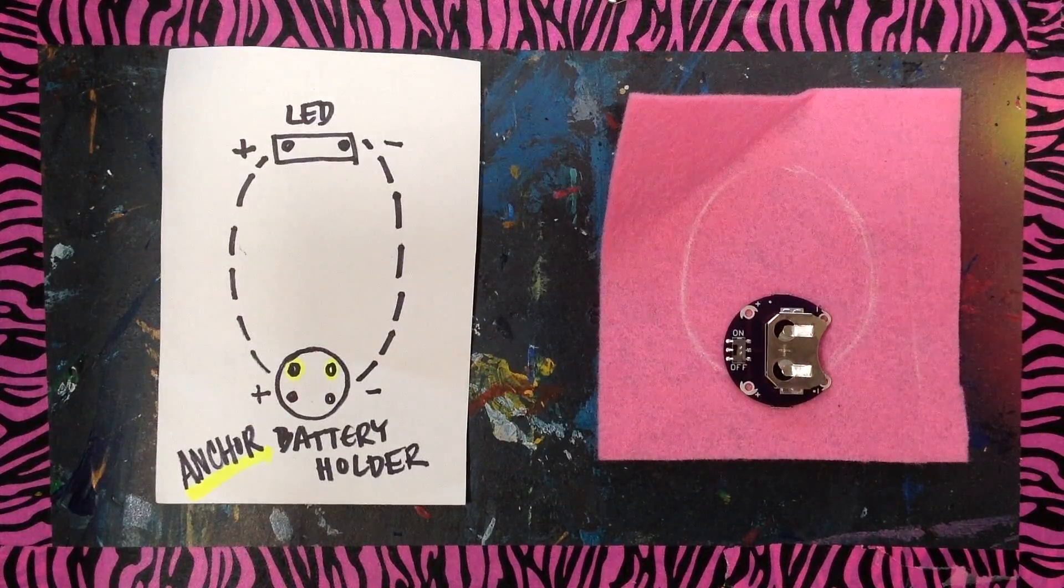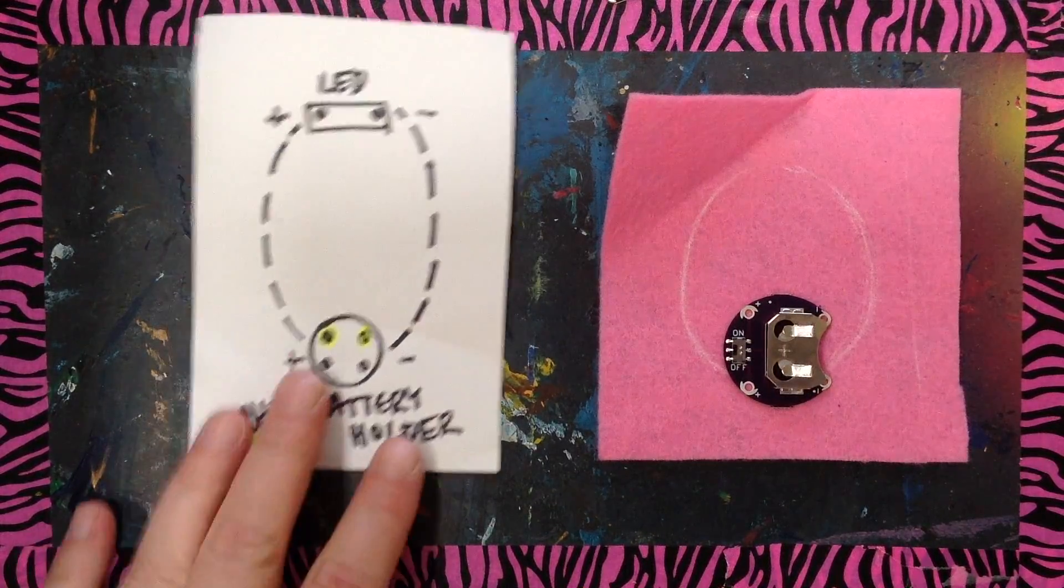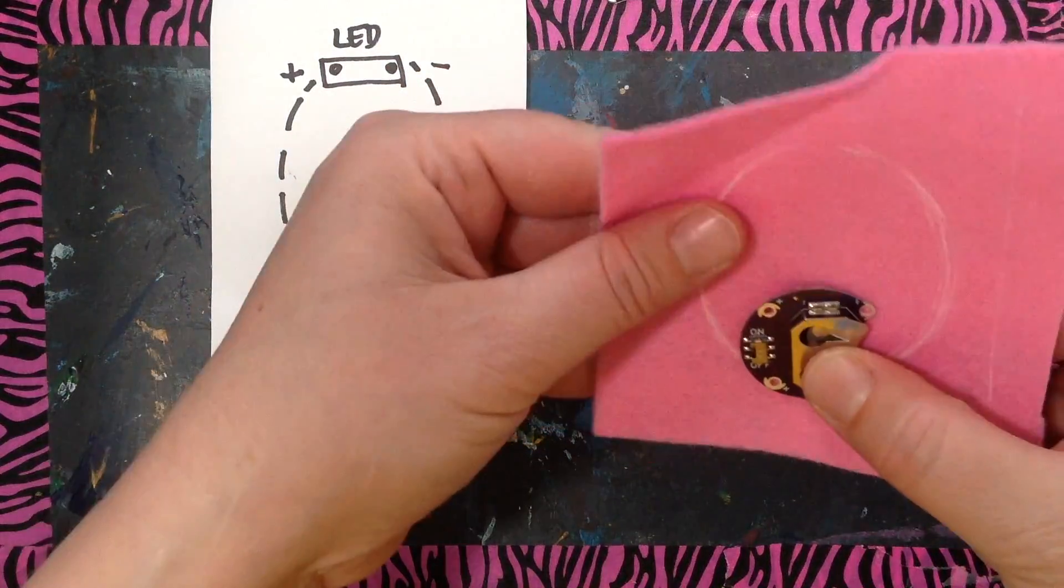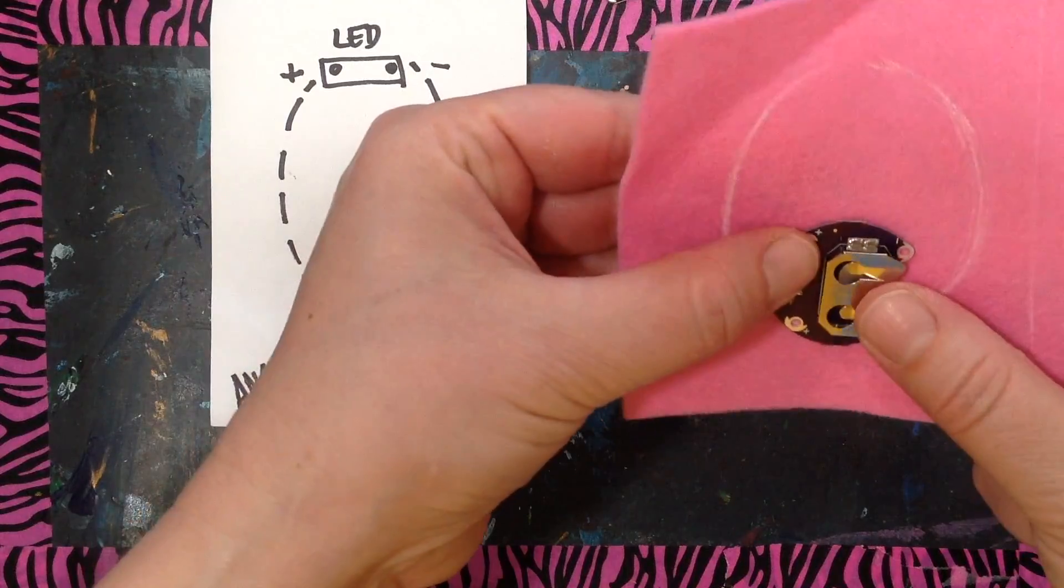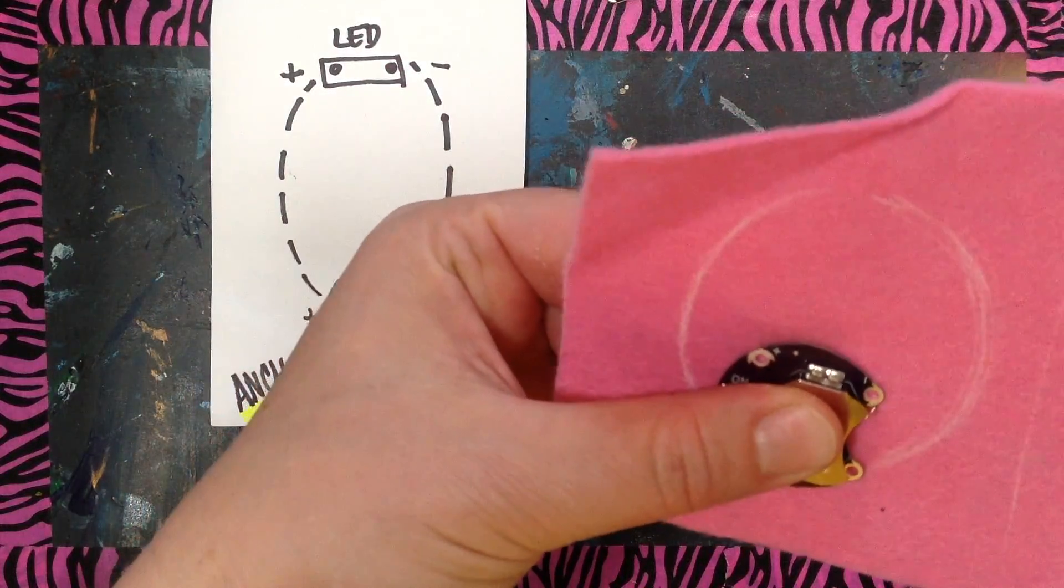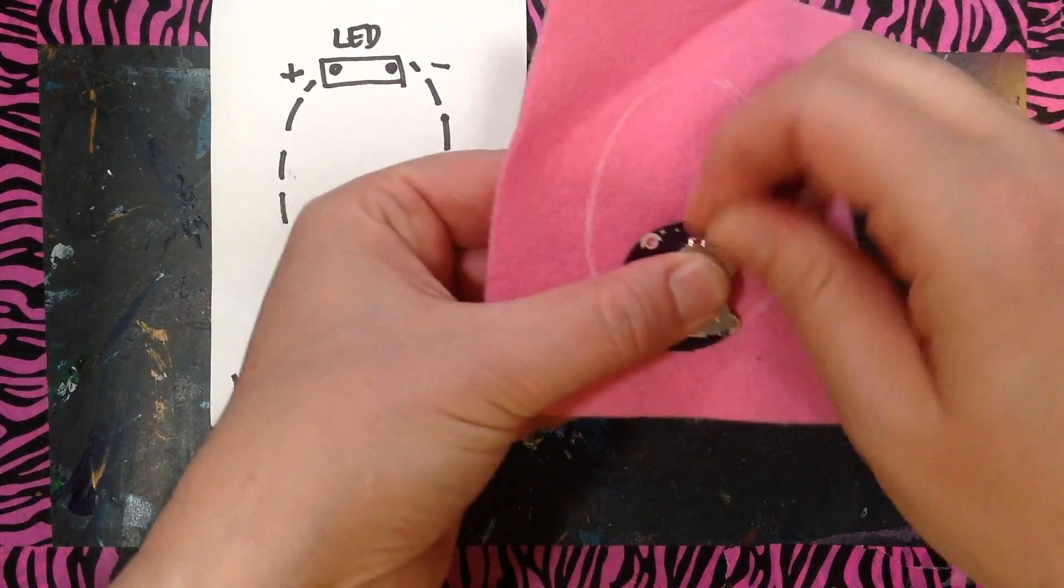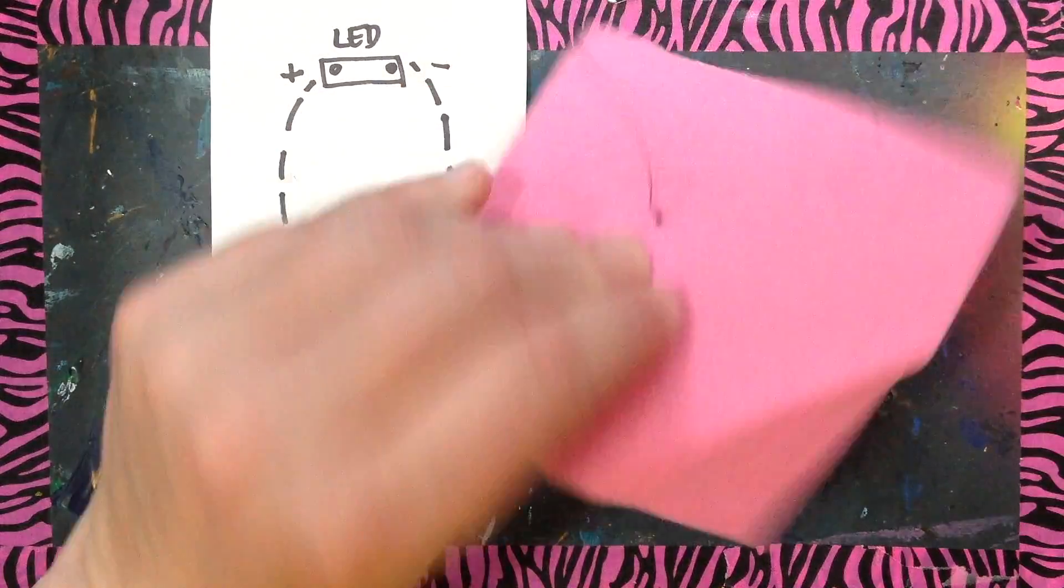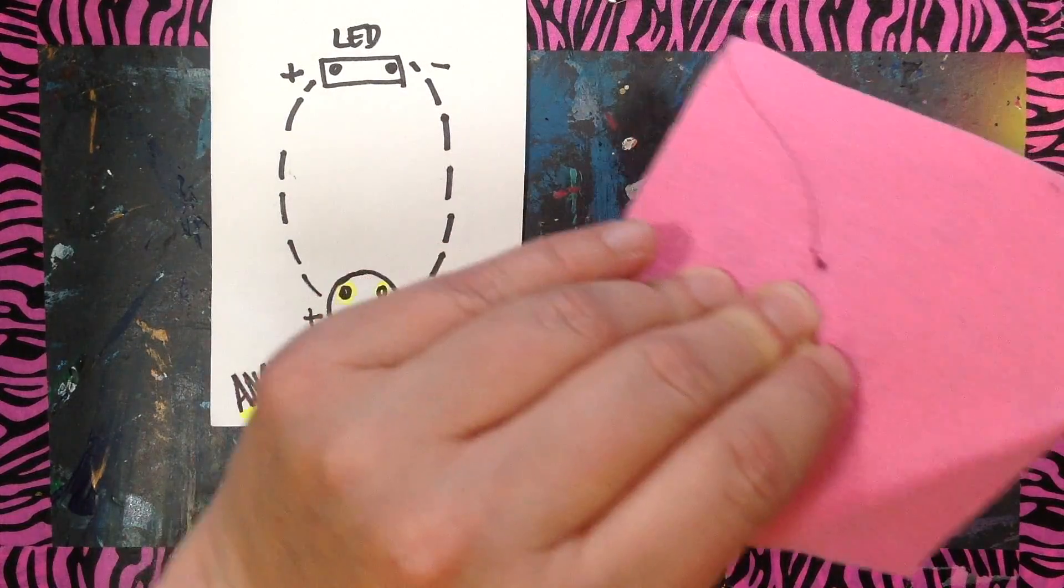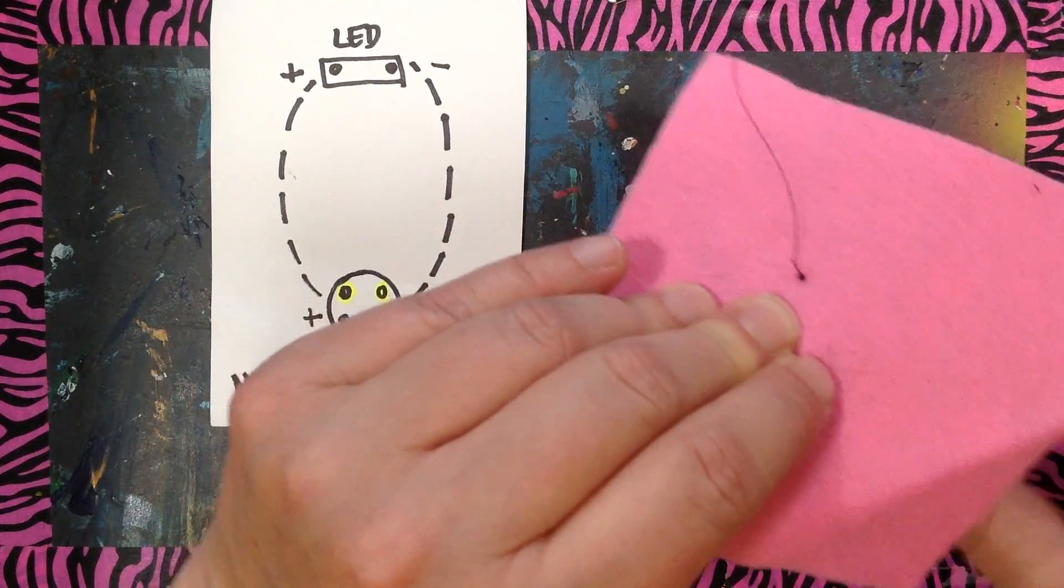So now I'm ready to anchor the top two holes of my battery holder using a whip stitch. So I'm going to try to come up from the bottom because you want to keep your knots on the bottom. And then you should have a knot thick enough that if you give it a firm pull, but not too hard, that it won't come through.